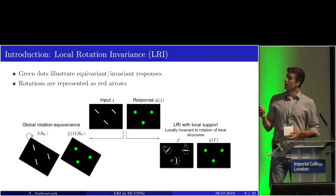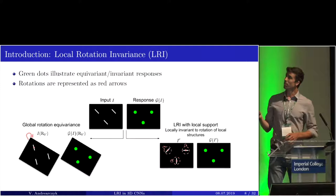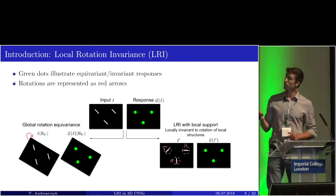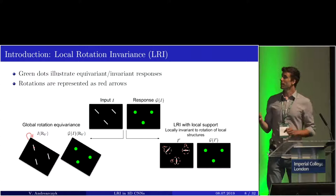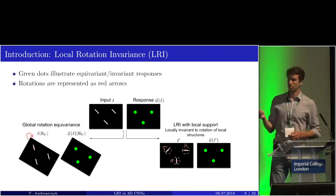Here is an illustration of this concept. We have global rotation equivariance: when we rotate the entire image, the response is rotated the same way. But when we have local rotations — where patterns are rotated locally — the response is unchanged when we have local rotation invariants. And this is what we will try to implement.